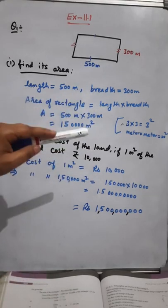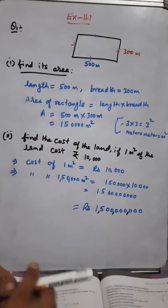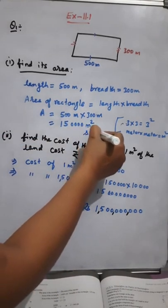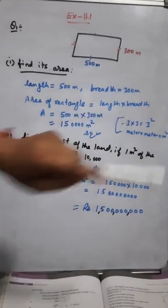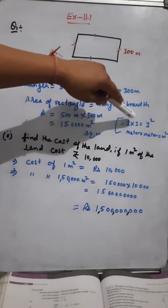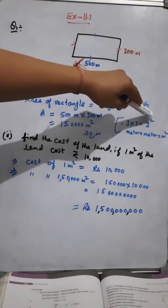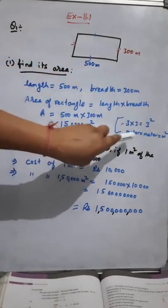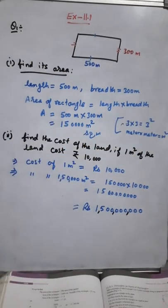Area is always measured in square units. Area ko always square unit mein measure karte hain. You can write meter square or square meter — your wish. Just like when you have meter into meter, the powers add up, so meter into meter becomes meter square.